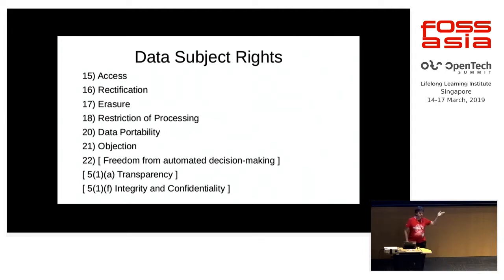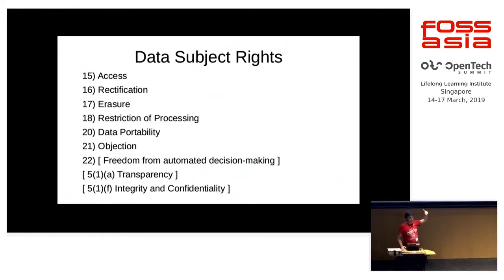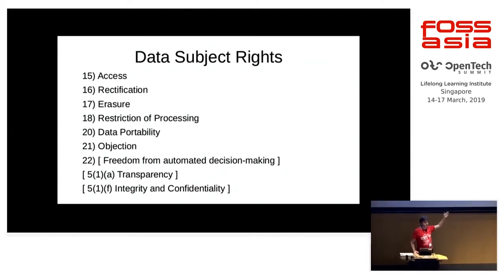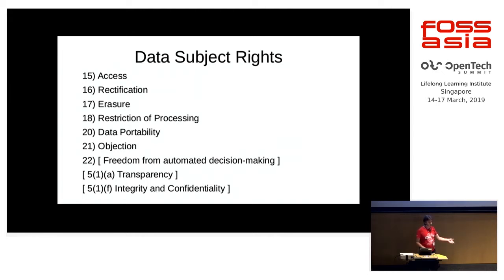Transparency is important because if the controller is not transparent about what they're doing, there's no way for you to exercise these rights — if you don't know someone is processing data about you, you can't even start this process. So there's a mechanism by which you must announce that you are processing data, generally by registration with a regulator. And finally, obligations of integrity and confidentiality: if you are entrusting confidential personal information to an organisation to process, they are obliged to keep it confidential and can't turn around and sell it having told you otherwise.